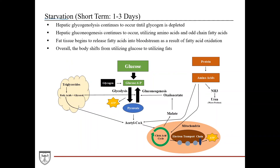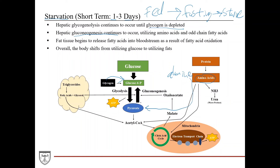We've now entered the early stages of starvation — one to three days. Glycogenolysis continues until glycogen is completely depleted. Gluconeogenesis continues as well, utilizing amino acids, particularly alanine, which is converted to pyruvate and contributes to gluconeogenesis, along with odd-chain fatty acids. Fat tissue continues to be broken down, giving free fatty acids that undergo beta-oxidation to yield acetyl-CoA for the citric acid cycle. As glycogen stores deplete and gluconeogenic capacity is exhausted, the body increasingly shifts from glucose toward fat utilization, with increased fatty acid breakdown.